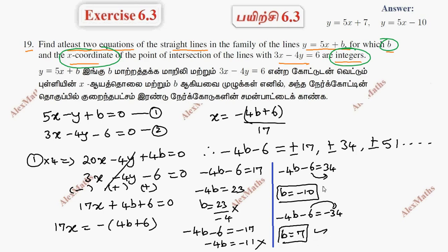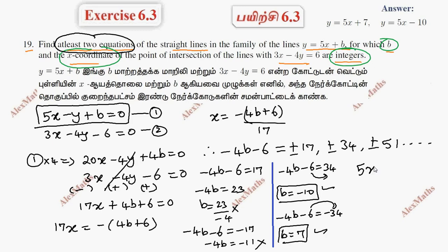This is okay. We have at least two equations, so we substitute the values. Substituting b = 10 gives 5x minus y minus 10 equals 0, and substituting b = 7 gives 5x minus y plus 7 equals 0.